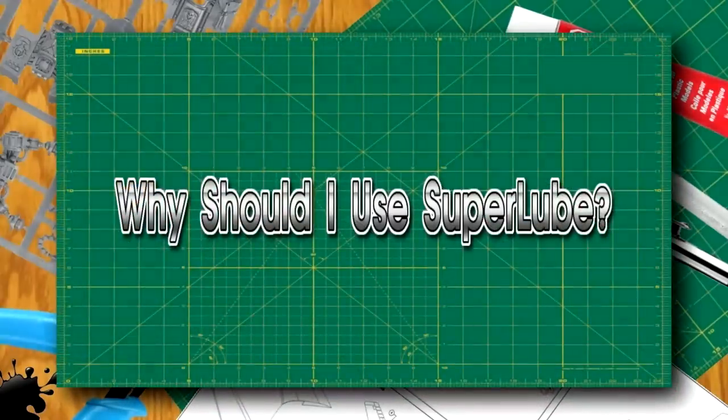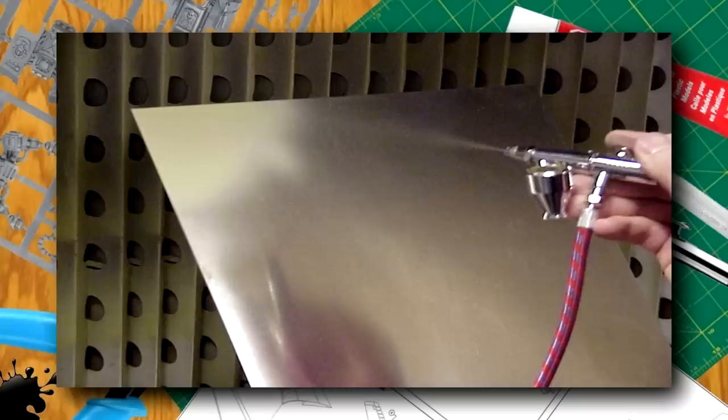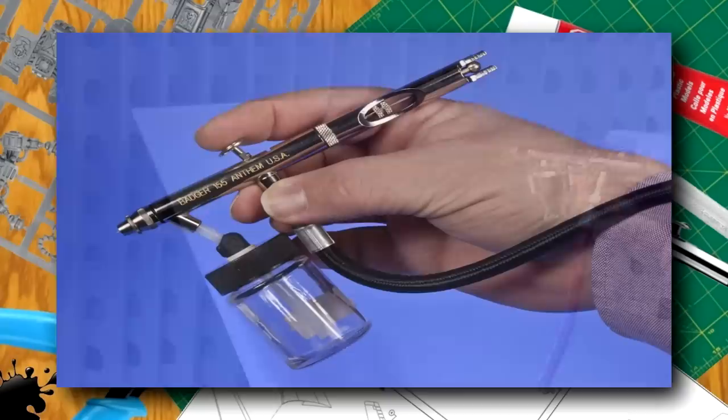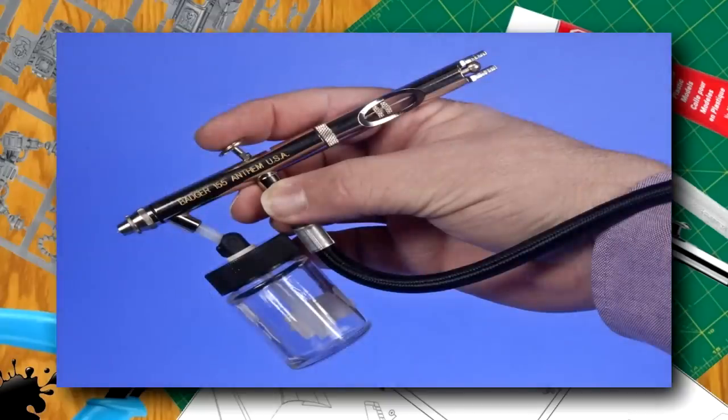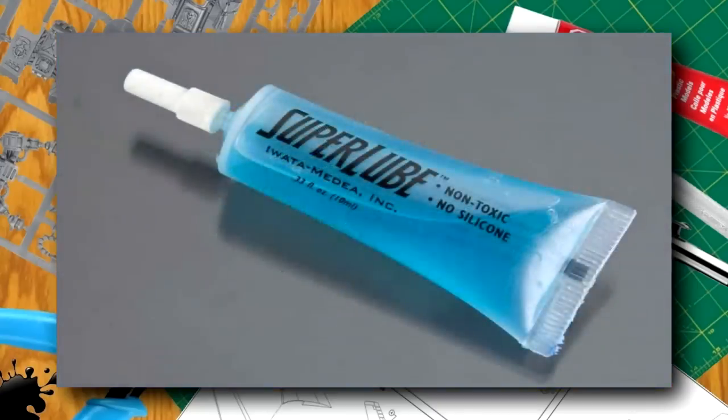Why should I use super lube? When you're using a substance to lubricate your airbrush needle, you run the danger of some of that substance getting into the spray and onto your project. That's why you only need a little bit. The question is what will happen when that greasy substance reacts with your paint. Super lube doesn't like to react with oil-based or water-based paints. That's why I recommend it. I know what it will do.